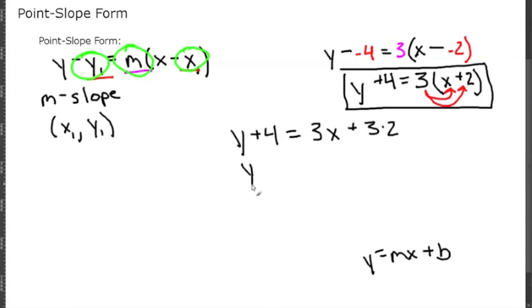That's going to be y plus 4 equals 3x plus 6. Subtracting the 4 from both sides, we'll get y all by itself, which is how we want the form to look.